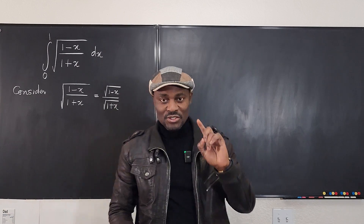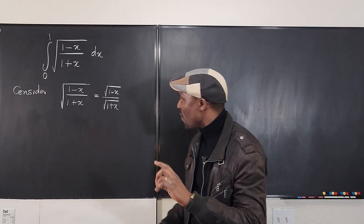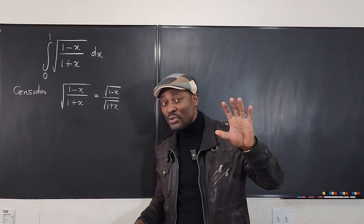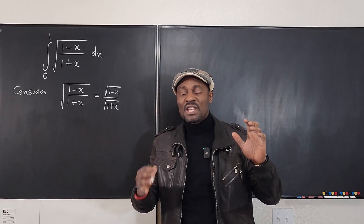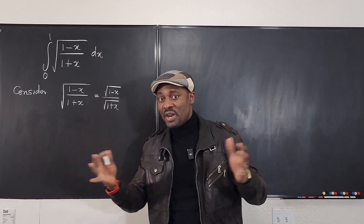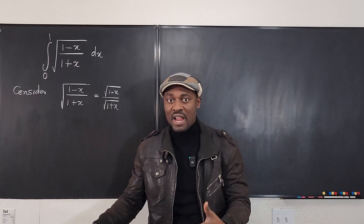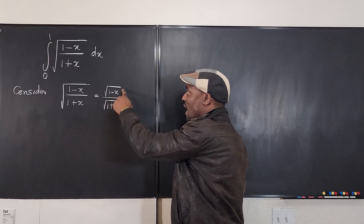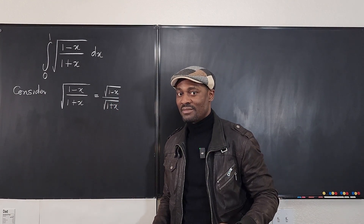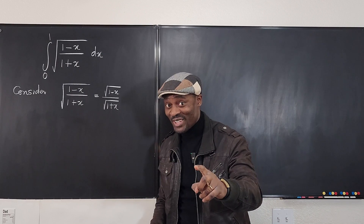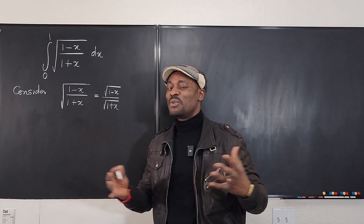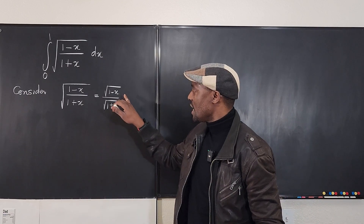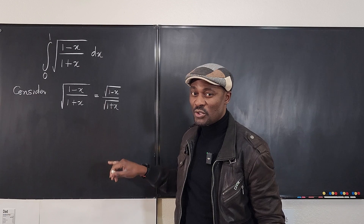However, there's something I want you to see. Whenever you rationalize for integration, the numerator is usually the problem. Because if you cannot split the numerator, or move it around, or have smaller fractions, then it becomes a problem. So what you want to do is rationalize the top, not the bottom. Remember that. If you try the top and it doesn't work out, you might go back to rationalizing the bottom. But usually, a problem like this, the top is what you want to focus on.